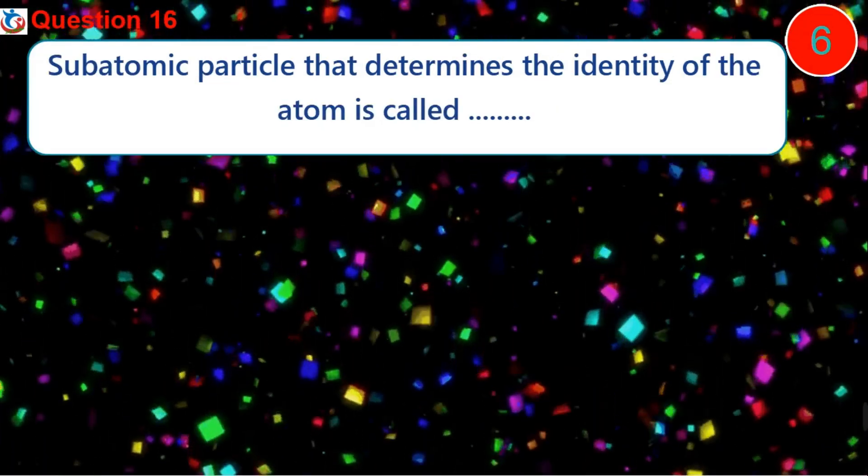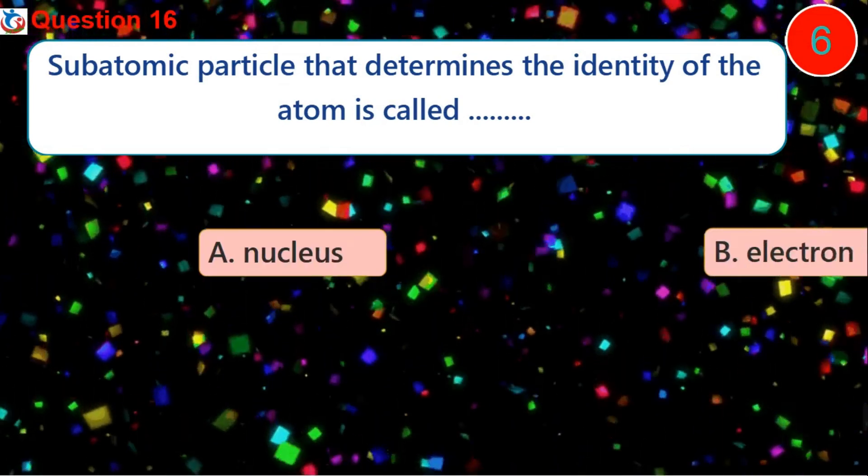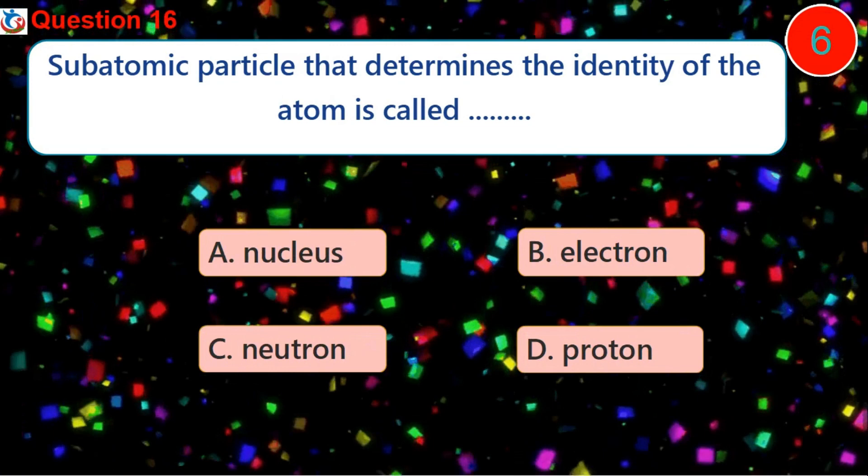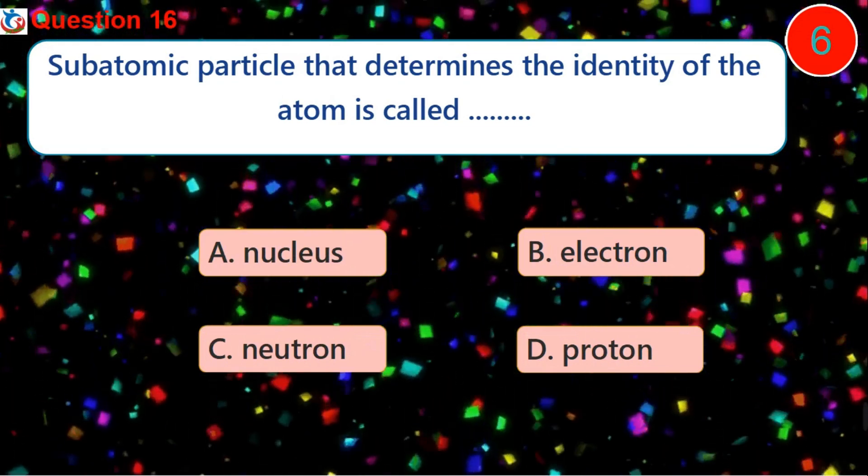Question 16. Subatomic particle that determines the identity of the atom is called dash. A. Nucleus B. Electron C. Neutron D. Proton.